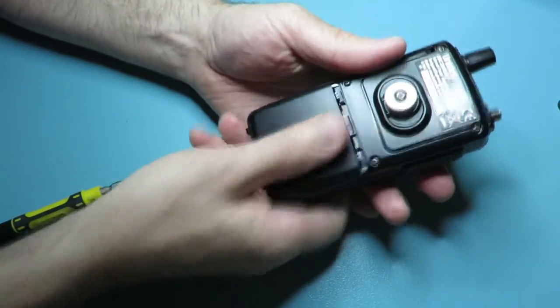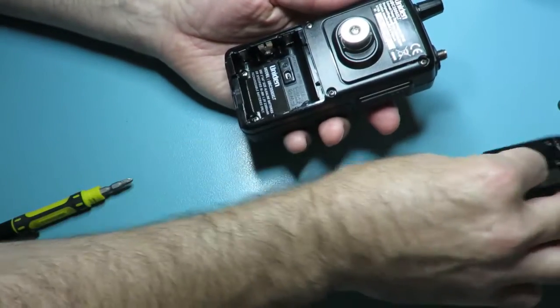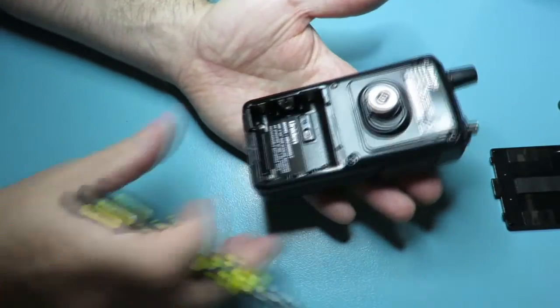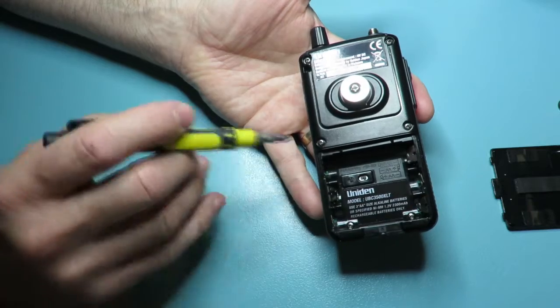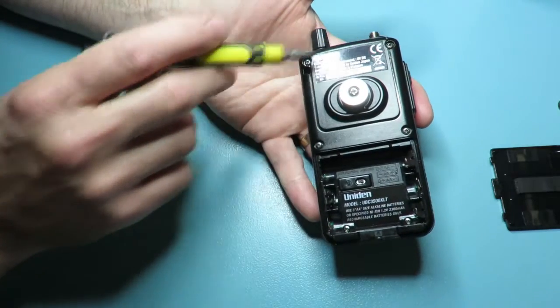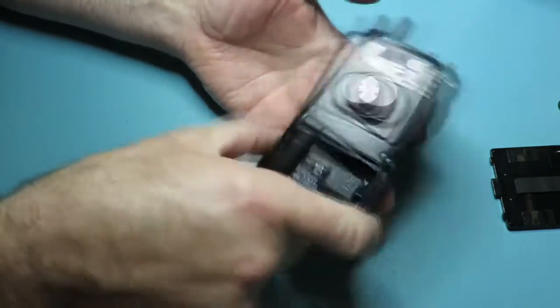So I'll just take the cover off. Here you'll see we have two recessed screws and four screws on the outer casing. All these need to be removed.